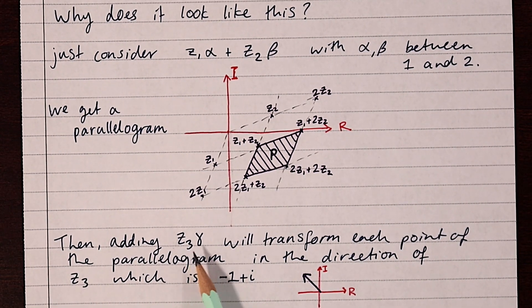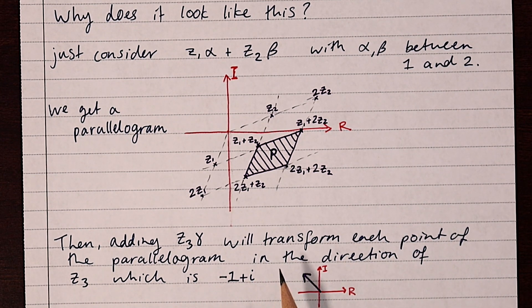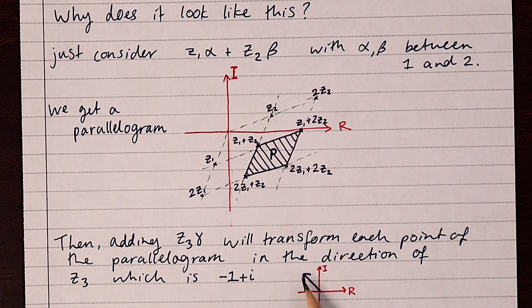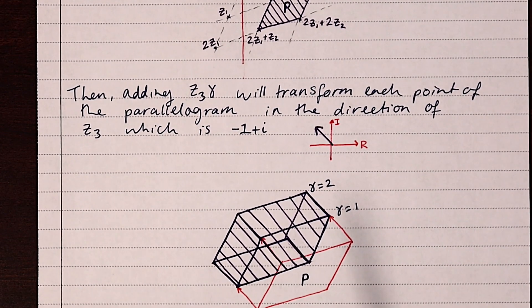Then adding on that third term z3 gamma, it will transform each point of the parallelogram in the direction of z3, which is minus one plus i, and that would be a transformation out in this angle, essentially to the left one and up one. So here's what the parallelogram looks like when it's transformed like that.